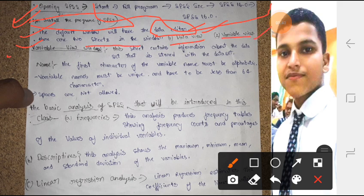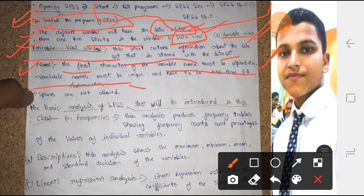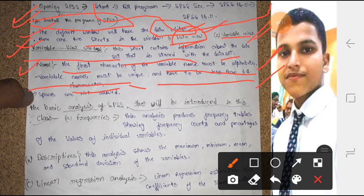How many kinds of sheets in SSPS? Two kinds of sheets: first is data view and second is variable. These are all important points for MCQ examination. Variable view window: this sheet contains information about the data set stored with the data set name. The first character of variable must be alphabetic. The name must be unique and have less than 64 characters. Remember 64 characters.